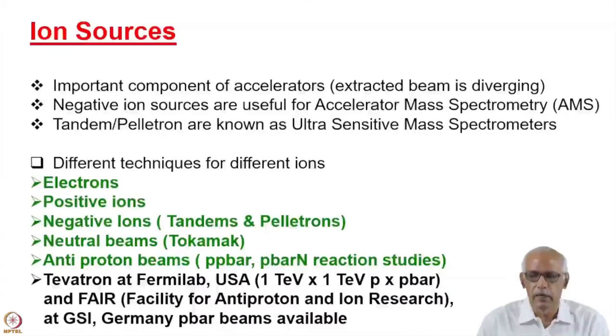In earlier lectures, we have discussed different kinds of ion sources. And in fact, not only in basic research, but also in the applied research, these things are very important. For example, negative ion sources are very useful in the field of accelerator mass spectrometry, where identification of various elements can be done with almost 10 to the power of minus 15 sensitivity. And therefore, these negative ions, some elements form negative ions, others don't form. And that is the characteristic property used in the case of tandem and pelletron kind of accelerators.